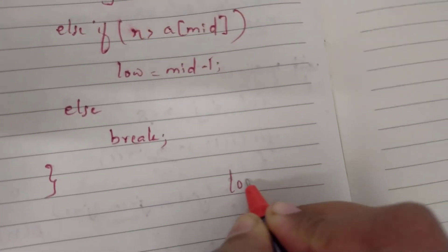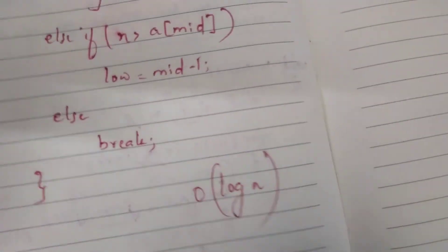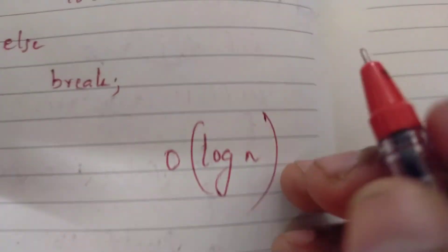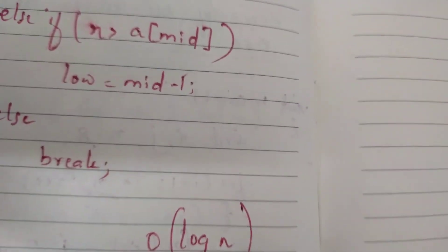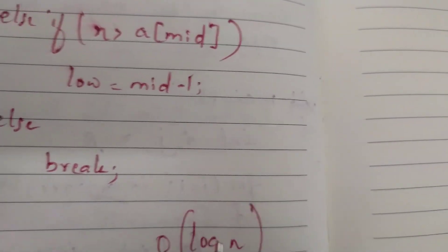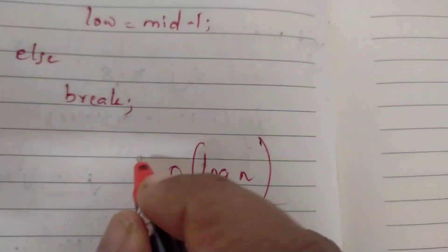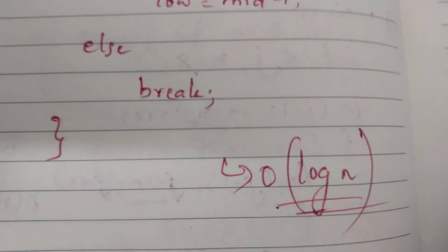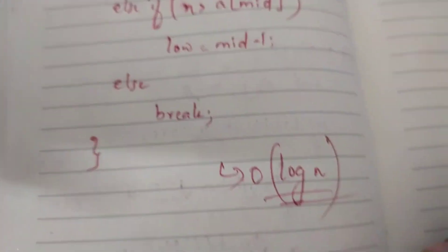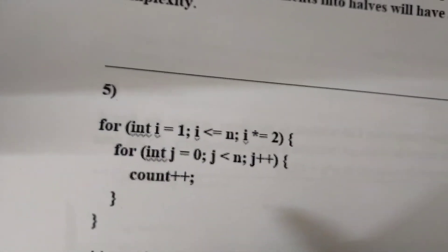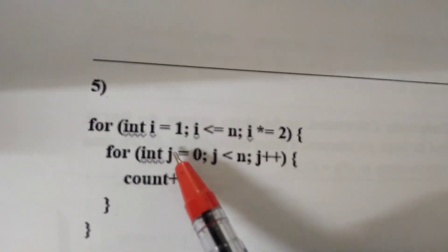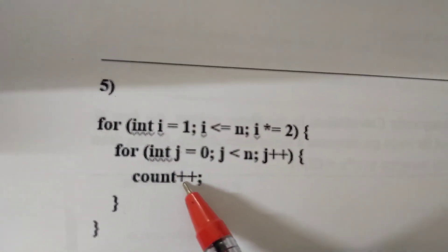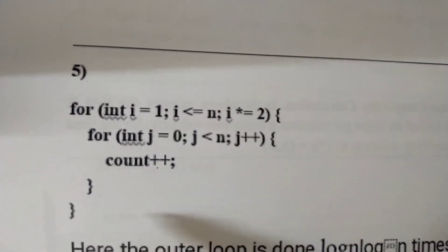If you want to use the recursion case, you can use order of log n. This is recursively dividing the elements into halves. So if you want to use order of log n, you can use this for loop as well — order of log n applies when elements are divided by a constant each iteration.